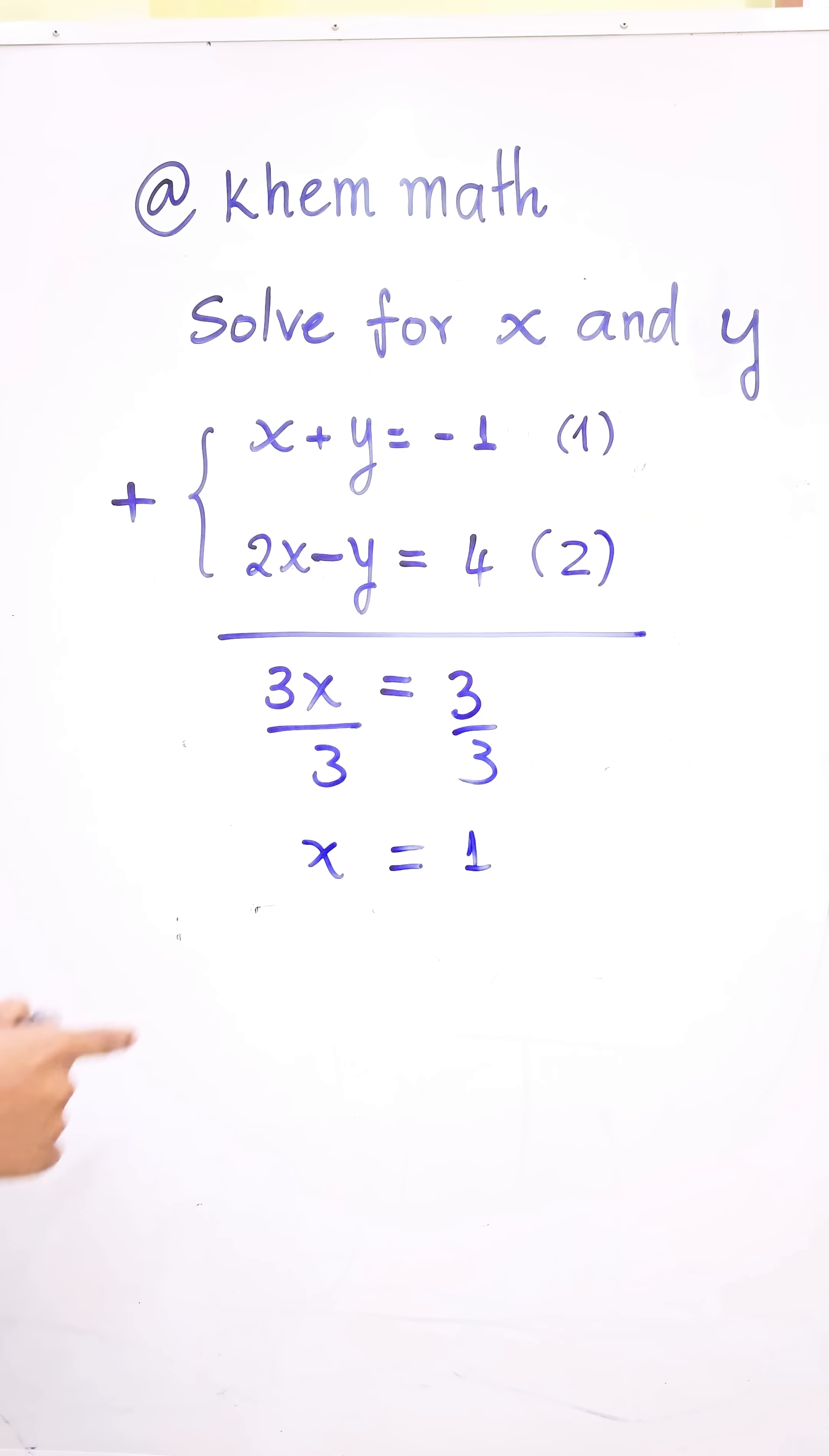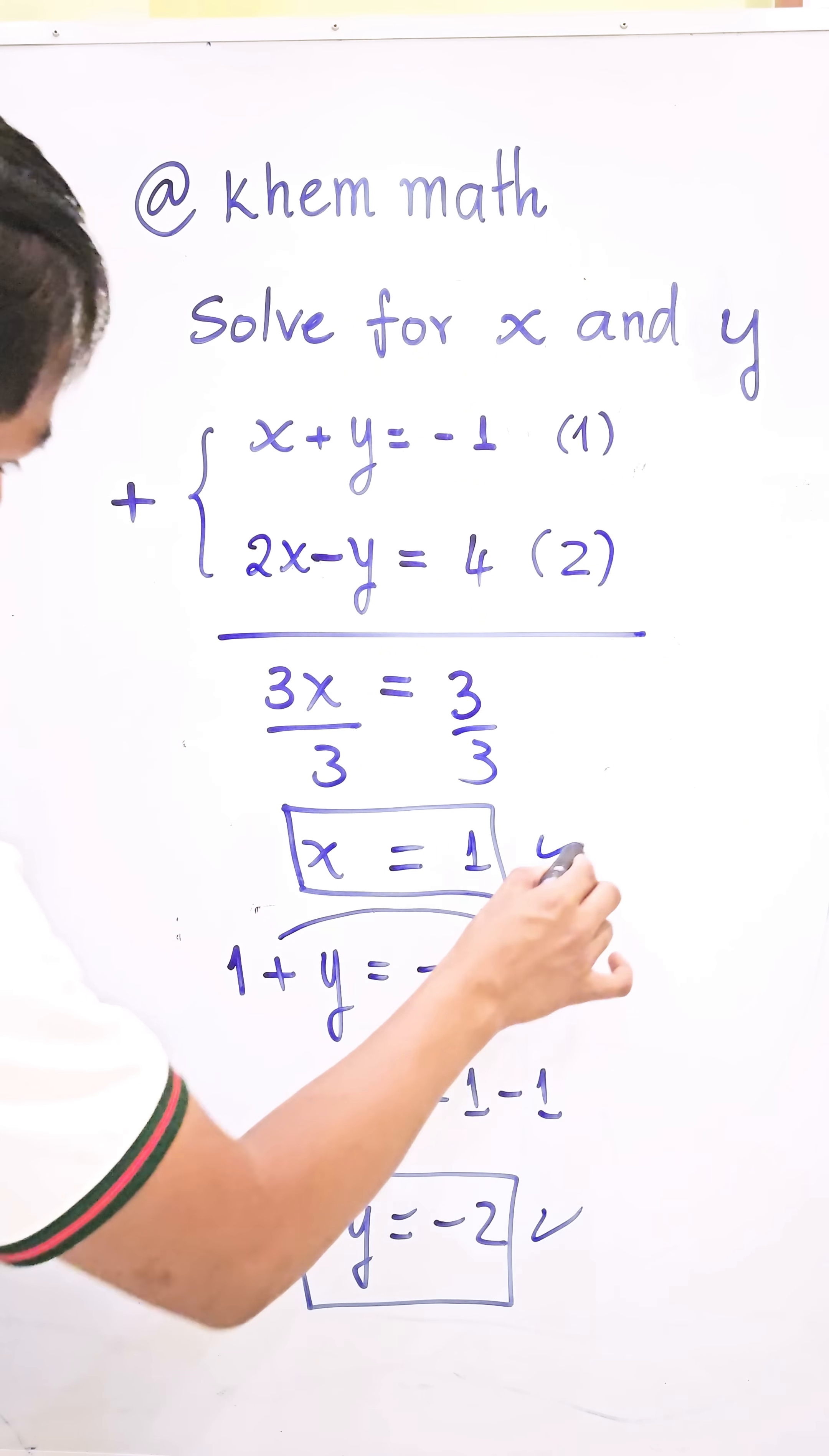Now we substitute x = 1 into the first equation, so 1 + y = -1. We move 1 to the right-hand side, so y = -1 - 1. Therefore y = -2. The values are x = 1 and y = -2 as our answer.